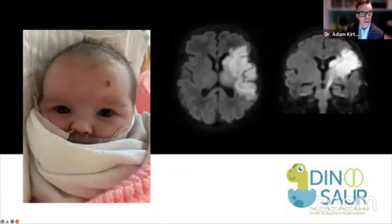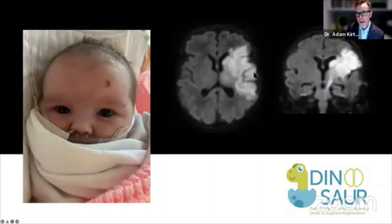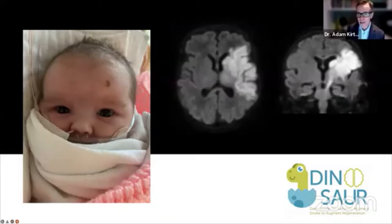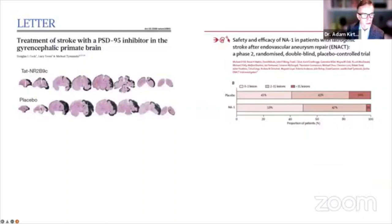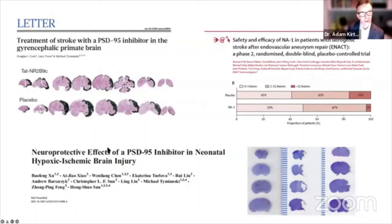What about true neuroprotection? Thanks to leaders at Utrecht — Manon Benders, Linda DeVries, and others — there is now a neuroprotection trial underway using erythropoietin, which many know is under investigation for other forms of injury. We're proud to be enrolling in Canada. It's a randomized trial where we can use imaging to predict risk and intervene in the first days of life to try to save brain cells — an exciting opportunity we've never had before. Emerging trials in adult stroke with exciting neuroprotective drugs may come to the world of neonatal stroke in the future.